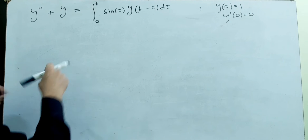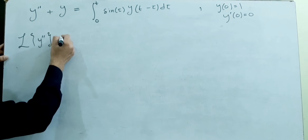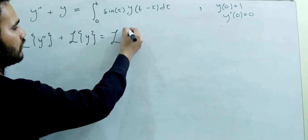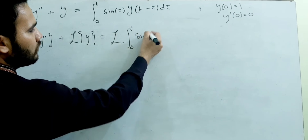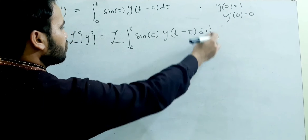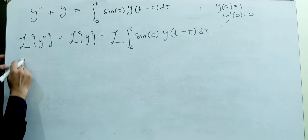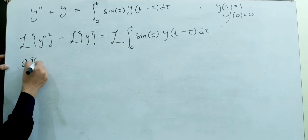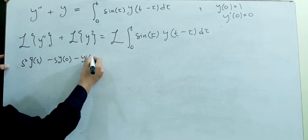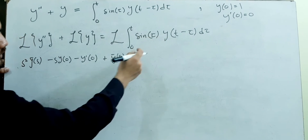Friends, I'm going to solve this second example again by using Laplace transformation. Taking the Laplace of y double prime plus the Laplace of y equals the Laplace of the integral from 0 to t of sin(tau) times y(t minus tau) d-tau. Using the derivative property of Laplace, we have: s² y̅(s) minus s·y(0) minus y'(0) plus y̅(s).